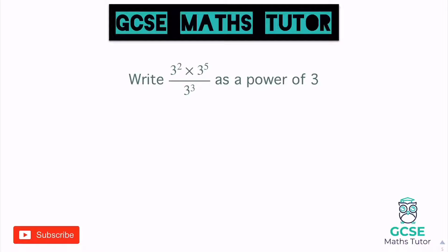Here we go. So three squared times three to the power of five, all over three to the power of three. And it wants us to write it again as a power of three. So all the base numbers are the same — they're all threes. And we're going to have to deal with this in a slightly different way, because we've got a multiplication on the top and then a division to deal with.